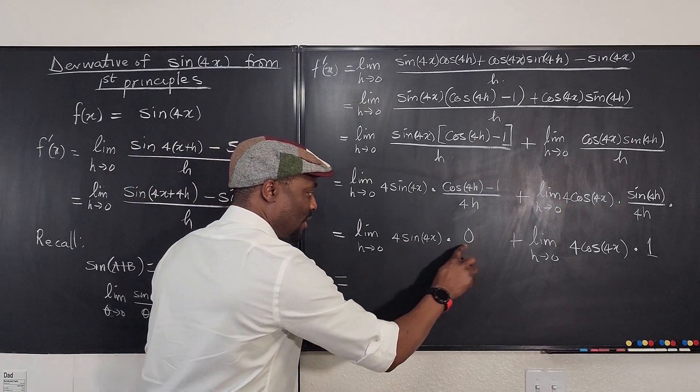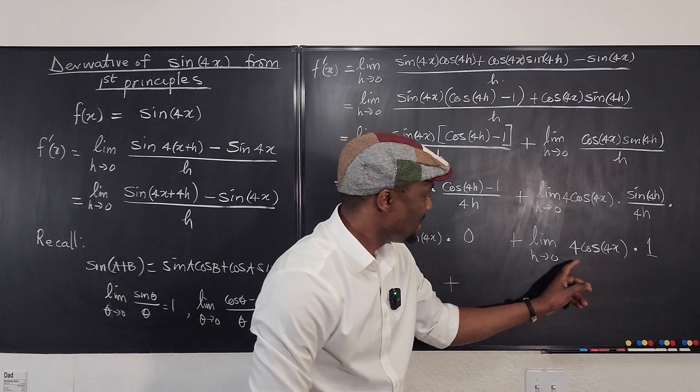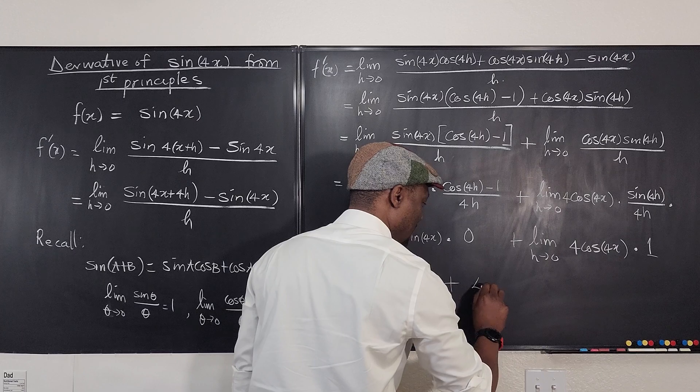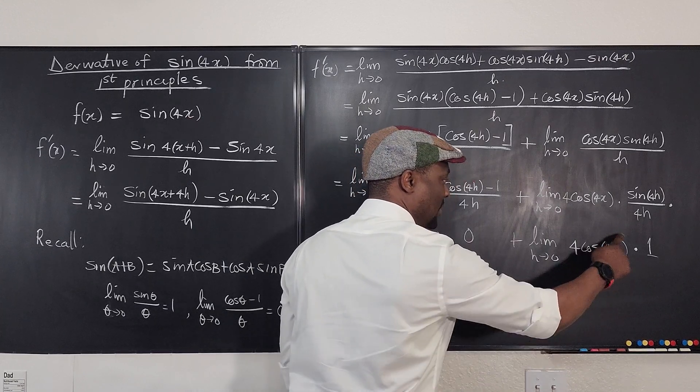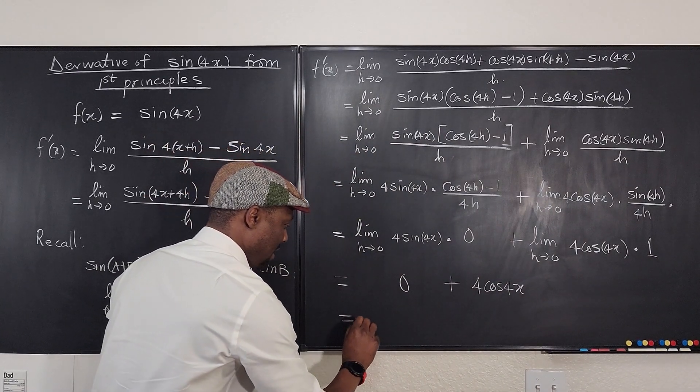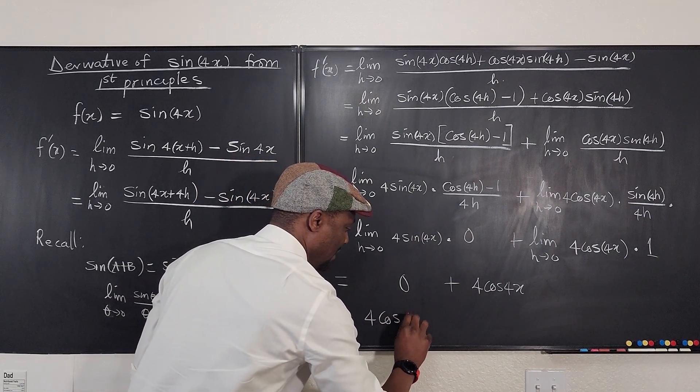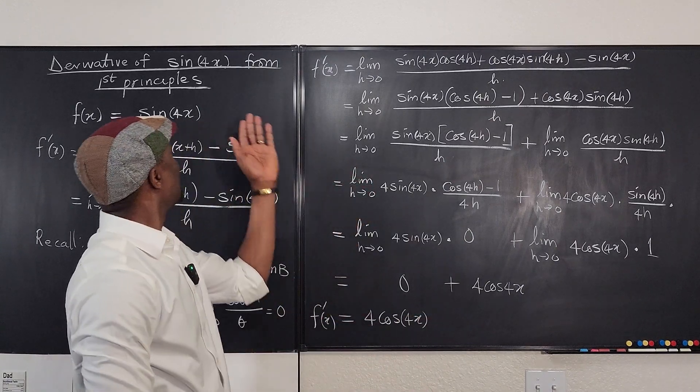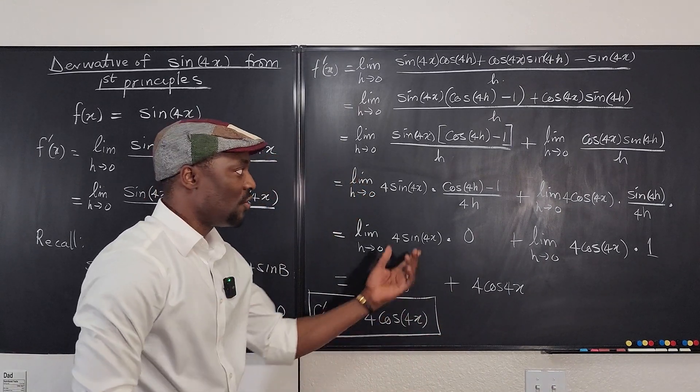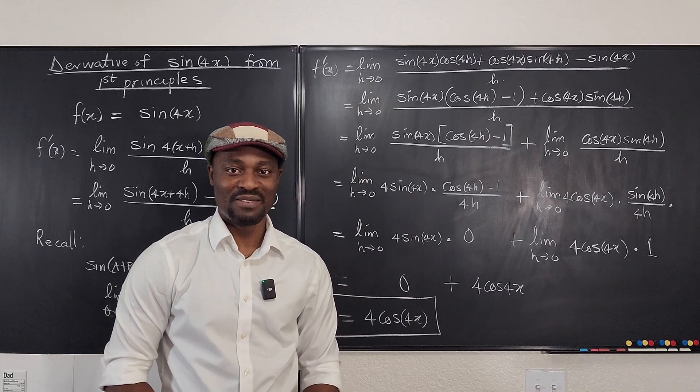This is 0, 0 times this is 0 and the limit of 0 is 0 plus this is the limit as h goes to 0 of just that and remember this is going to be just 4cos(4x) because there's no h in this expression and this is 1. We're done, this is equal to f'(x) is equal to 4cos(4x) and this is what you get if you apply the chain rule to this and we're done. So from first principles you can also get this. I hope you learned something, never stop learning because those who stopped learning have stopped living. Bye-bye.